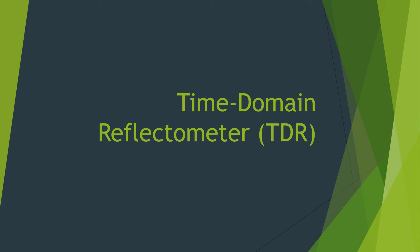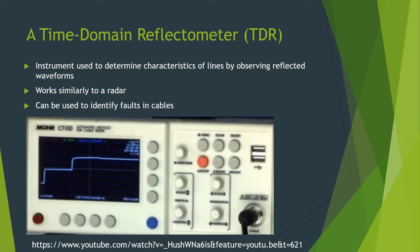In this video, we'll explore time domain reflectometers and apply time domain transmission line concepts in order to see what a time domain reflectometer would see. A time domain reflectometer, or TDR, is an instrument that can be used to determine the characteristics of transmission lines by observing the reflected waveforms from those lines, similarly to how a radar works, and it can be used to help identify faults in the cables.